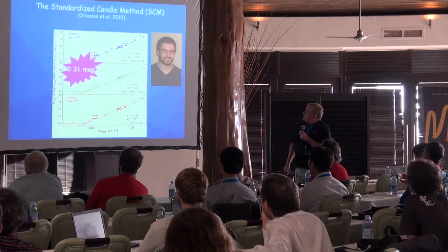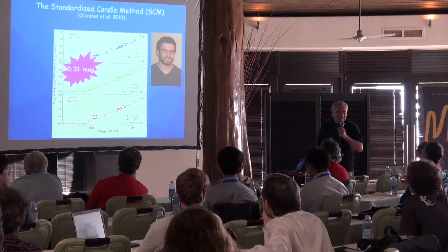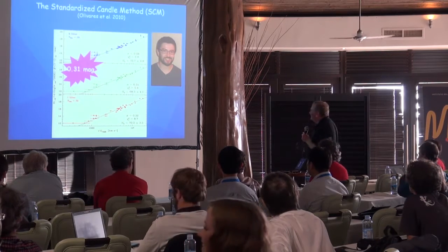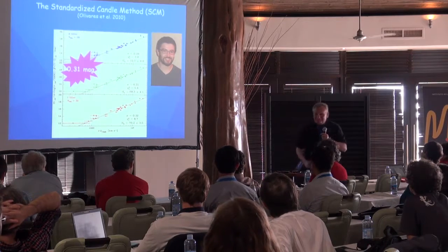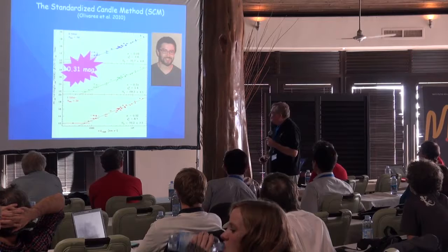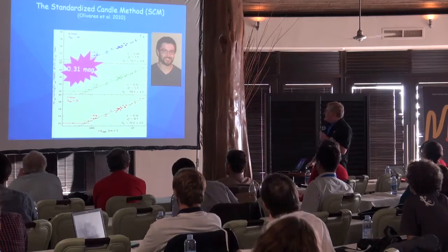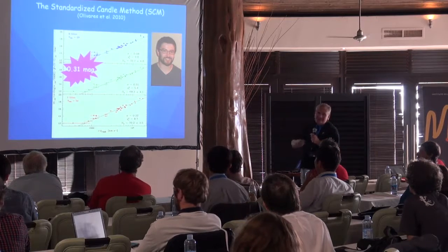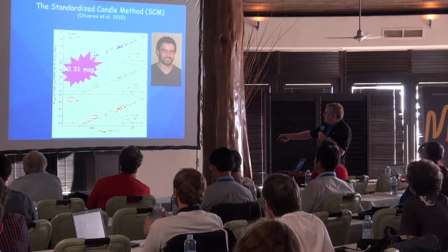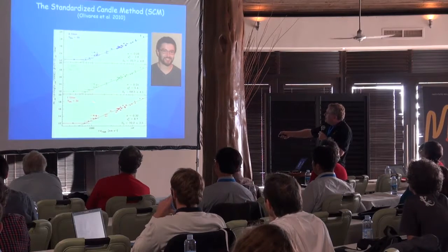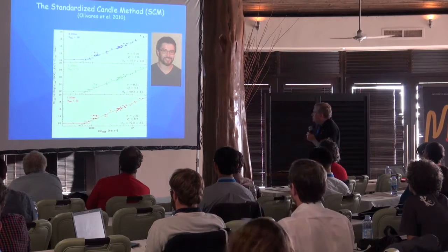Felipe Olivares — who was my student at the time — used an expanded sample of low-redshift supernovae in different bands: B, V, and I. Again, you see a nice Hubble diagram with a dispersion of 0.3 magnitudes.